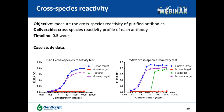With this cross-reactivity data, if you want to use monkey for animal studies you can use either MAb1 or MAb2, but if you want to use rat, only MAb2 is suitable. Neither MAb1 nor MAb2 works in mouse models. In that case, you need to develop a surrogate mouse anti-mouse antibody using our ImmunoPlast technology, or generate a transgenic mouse with the human gene knocked into mouse animals.